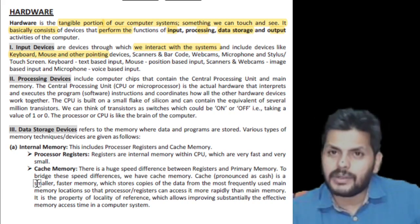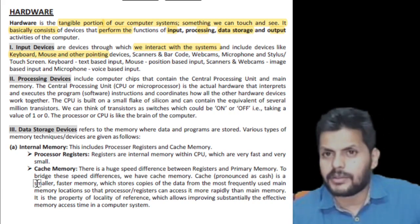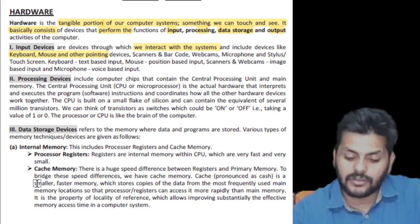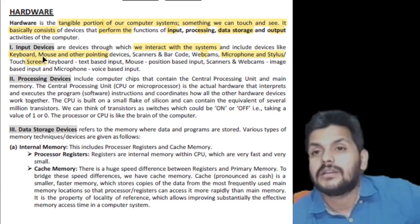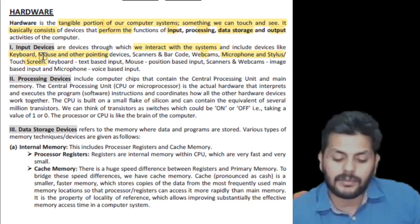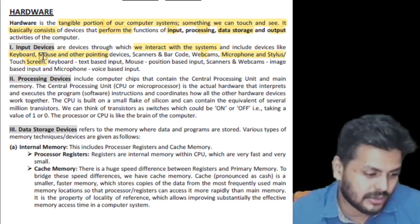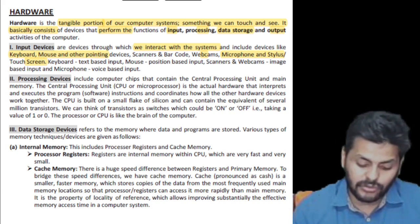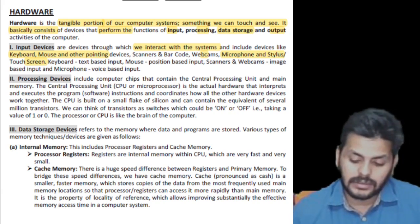Input devices include keyboard for text input, mouse for position-based input, scanners and webcams for image-based input, and mic for voice-based input. Barcode readers are optical reading inputs used in supermarkets and malls. Keyboard, mouse, webcam, mic, stylus, and touchscreen are all input devices.